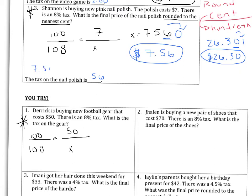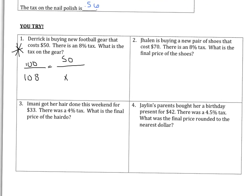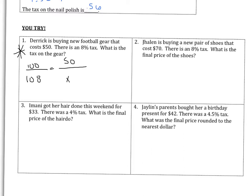For number one, when you cross-multiplied, you should have gotten that the price of the new football gear was $54. But the question asks what is the tax on the gear — you must use CUPS. If you answered $54, that would be incorrect because that's the final price. To find the tax, take the new price, $54, minus the old price, which gives a tax of $4.